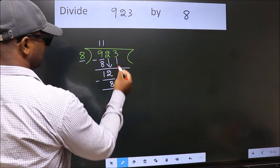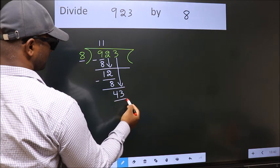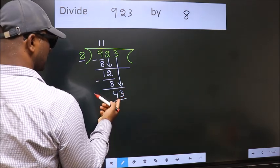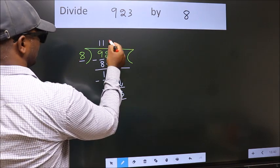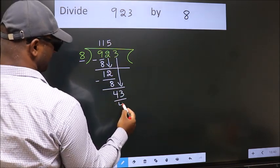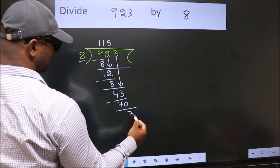After this, bring down the beside number. So, 3 down. So, 43. A number close to 43 in 8 table is 8 fives 40. Now, we subtract. We get 3.